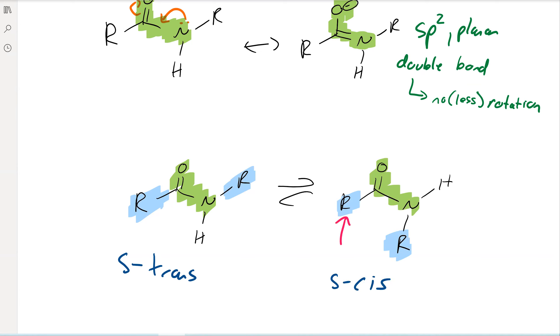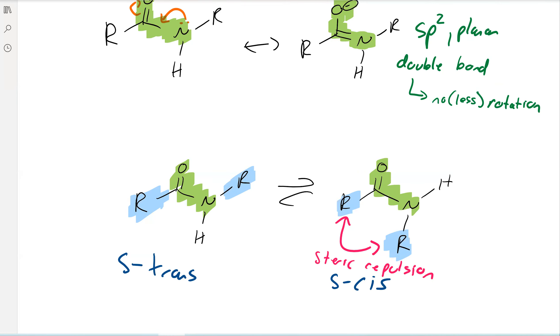If you think about which one's more stable, in the cis conformer, we've got that steric repulsion. And so the trans is what's preferred.